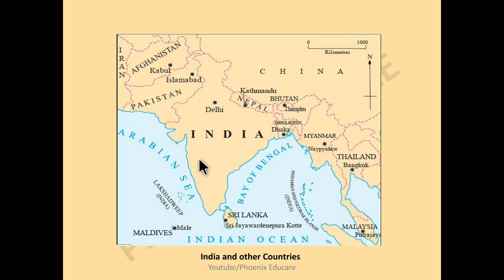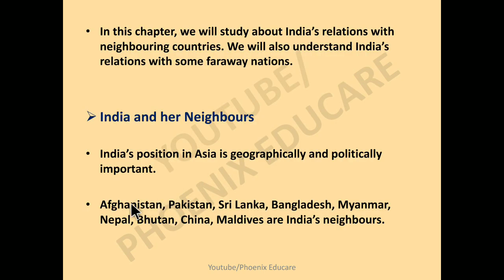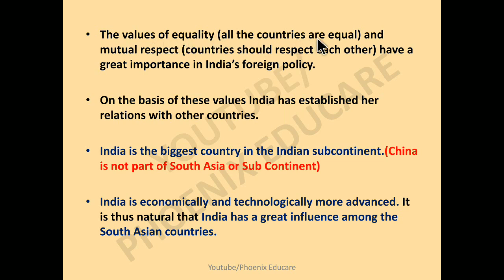Looking at the map of South Asia — with the Arabian Sea, Bay of Bengal, and Indian Ocean — India's position is very important. Around 40 percent of world trade is carried out using ships through the Indian Ocean. Since India is located near the Indian Ocean, India has a very strategically important location. Afghanistan, Pakistan, Sri Lanka, Bangladesh, Myanmar, Bhutan, Nepal, China, and Maldives are all India's neighbors.